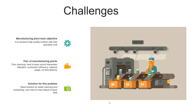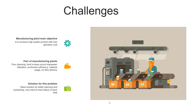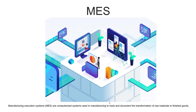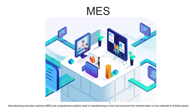These are the core challenges faced by most manufacturing industries. After looking at all these problems, it is clear that we need a solution for better planning, scheduling, and proper tracking of tasks. That's where MES systems come into the picture. MES, or Manufacturing Execution Systems, are computerized systems used in manufacturing to track and document the transformation of raw material to finished goods.